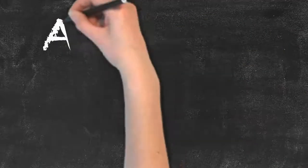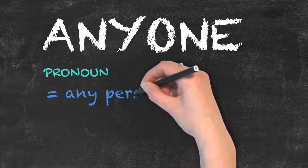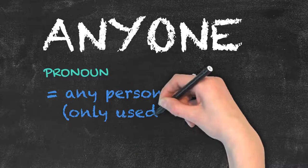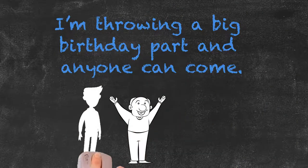Anyone versus any one - this set of words is often confused. Let's take a look at their differences. Anyone, spelled as one word, is a pronoun and indicates any person. It is only used for people. For example, I'm throwing a